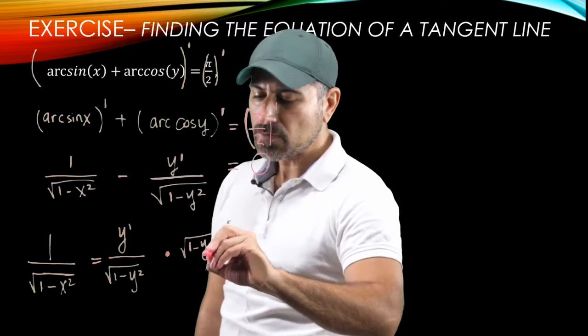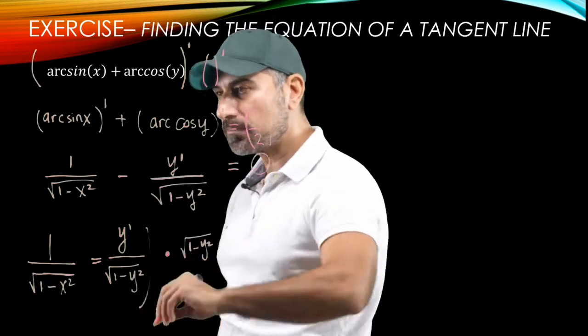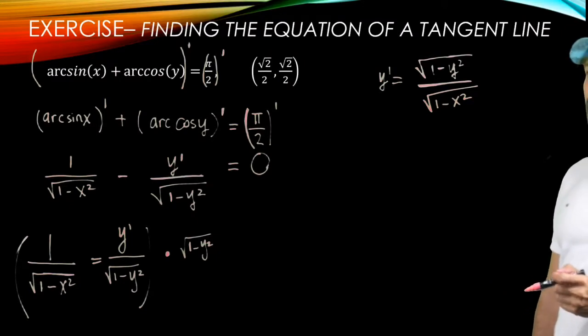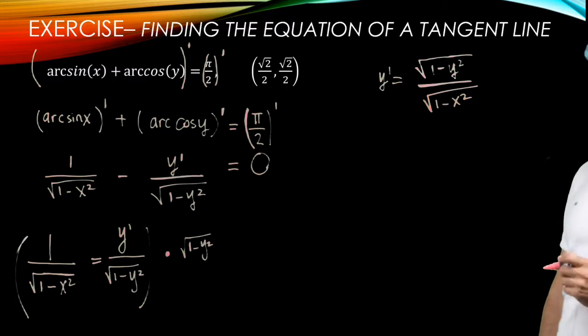So why don't we multiply both sides of the equation by one minus y squared. Then y prime is equal to radical one minus y squared divided by radical one minus x squared.